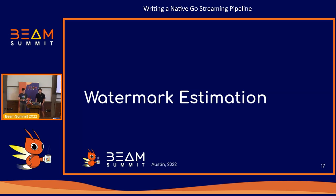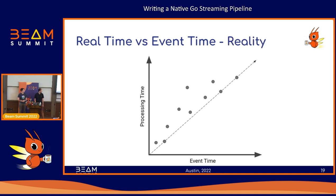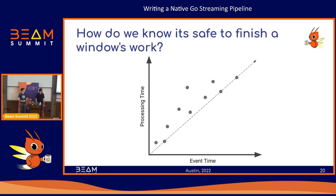Now I'm going to talk about watermark estimation. Traditionally we expect that our event time and our processing time are essentially the same — an element comes in and we immediately process it. But in reality there's some variable lag between the time an event comes in and when we process it. So that begs the question: how do we know it's safe to finish a window's work? If we're trying to emit data representing 10 minutes of event time, how do we know we've actually processed all of the data for that window? Beam's answer is watermarks.